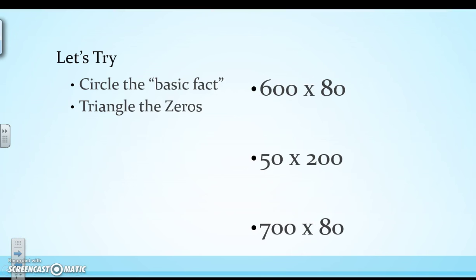All right, let's try with some bigger numbers now. So my basic fact in 600 times 80 would be 6 times 8. I know 6 times 8 is 48. And then if I triangle my 0s, I have to triangle every single one of them. I have two 0s here and one 0 here. 2 and 1 is 3. So in my product, I will have three 0s. So 600 times 80 is 48,000.